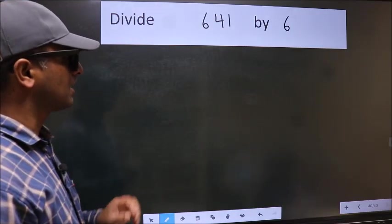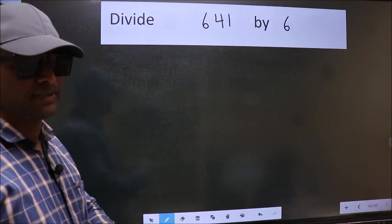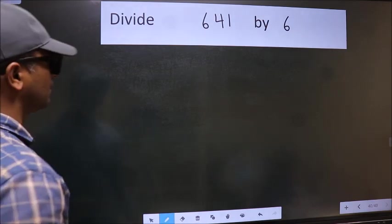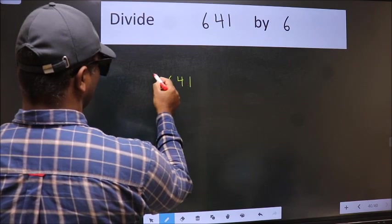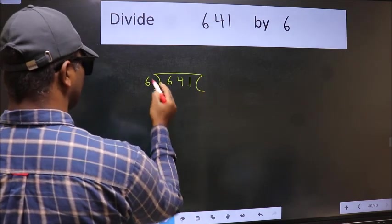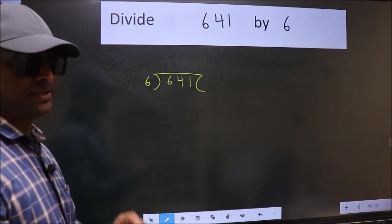Divide 641 by 6. To do this division, we should frame it in this way: 641 here and 6 here. This is your step 1.